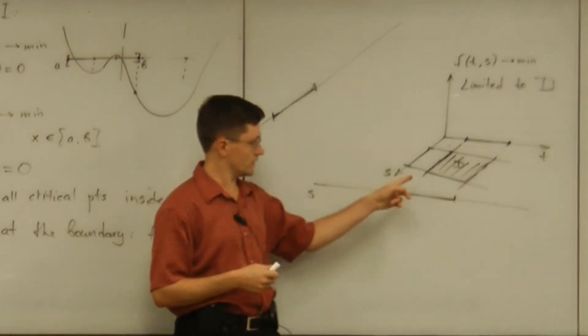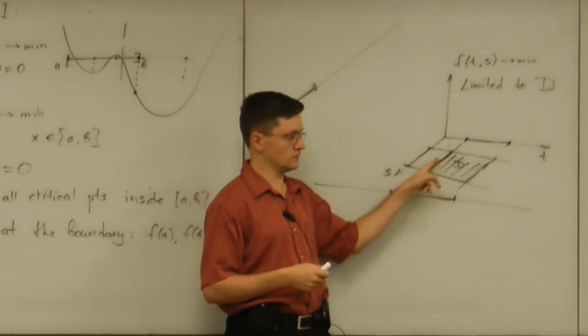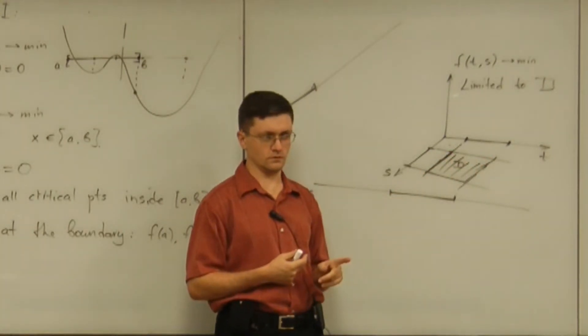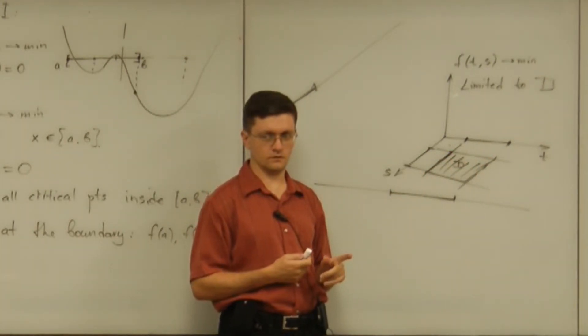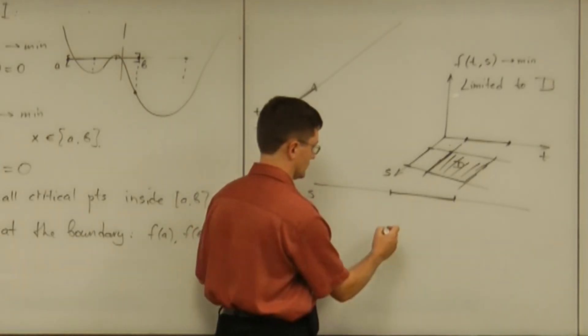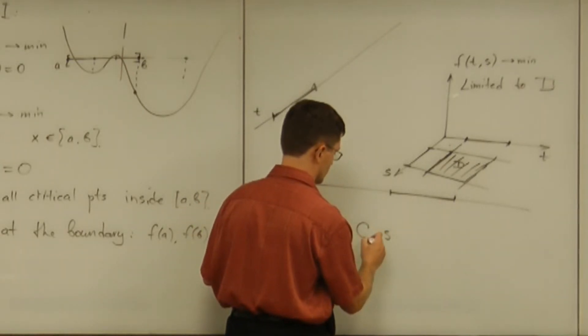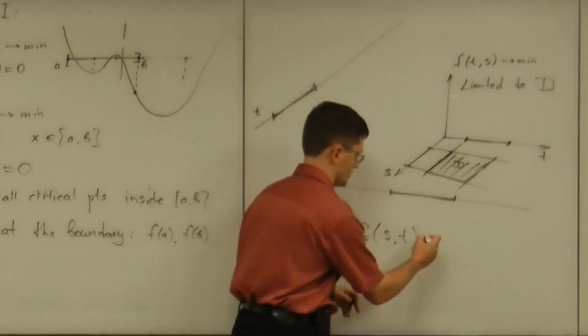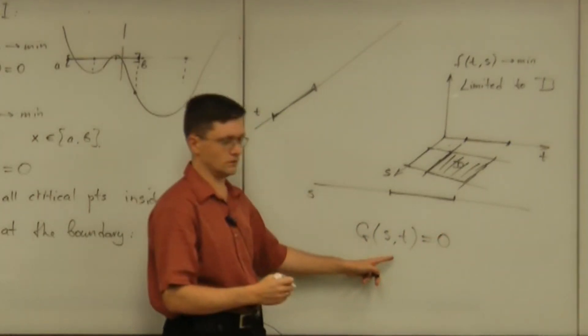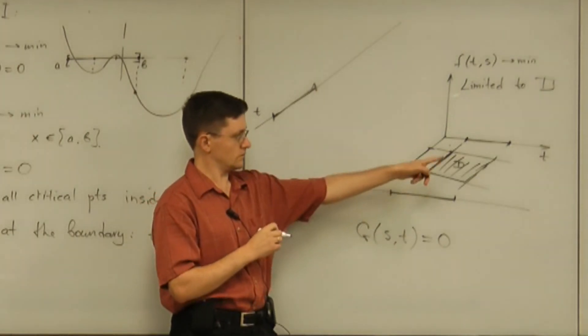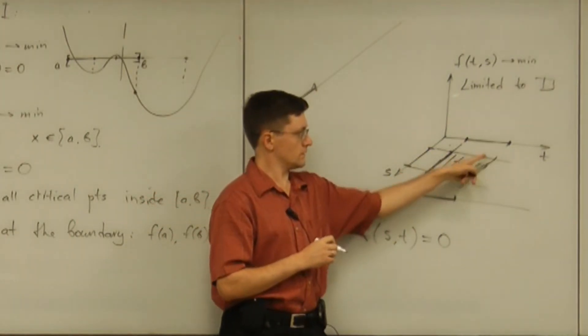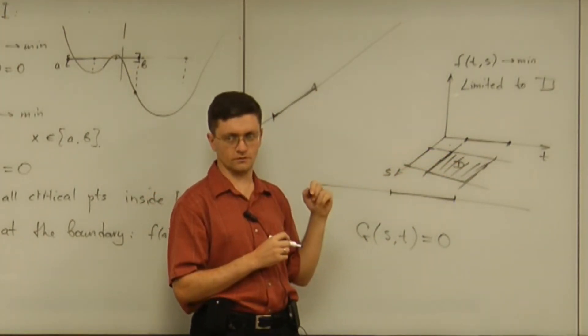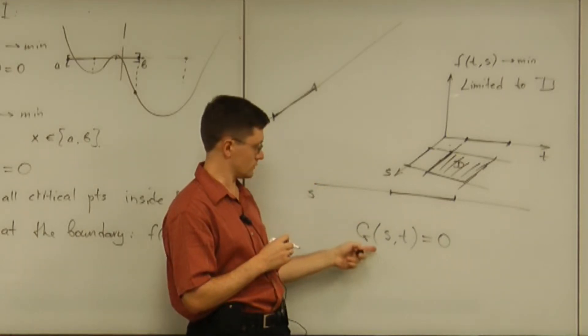Now, can you think of an equation for the rectangle? Do you know an equation on s and t? So, call it g. g of s, t. So that g of s, t equals zero describes exactly the perimeter of that rectangle. Well, that would be hard to think about.